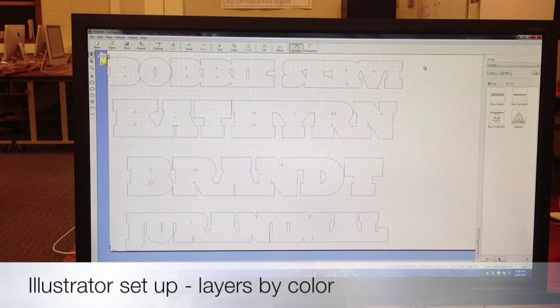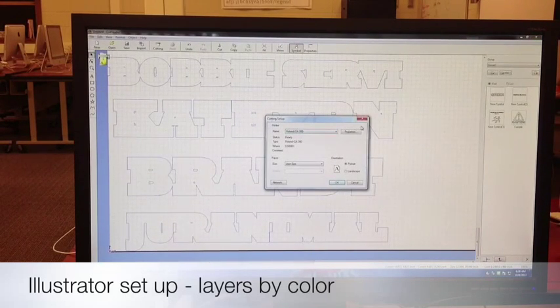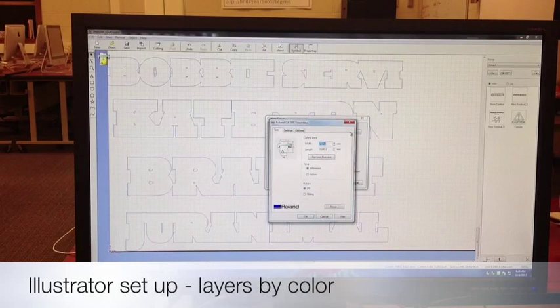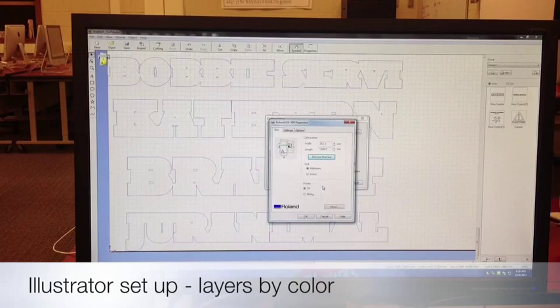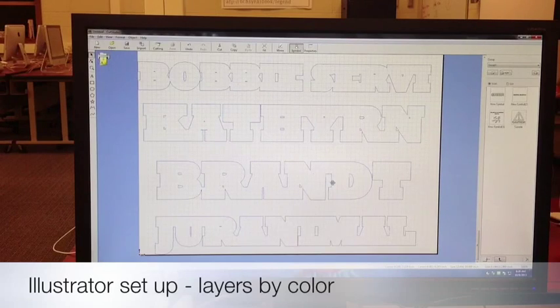Now, in the Cut Studio software, you can see exactly what it is that we're going to be cutting. The first thing you want to do here is make sure you have the correct printer selected. So you're going to go up to File and down to Cutting Setup. Under Cutting Setup, make sure you have the Roland GX-300 selected for the printer, and then we're going to click on Properties. Under Properties, we can tell the software how big the vinyl is that we're cutting by simply clicking on the Get From Machine button right here, and that will load the correct size into the software. Click OK, and click OK again, and we're going to be ready to cut.